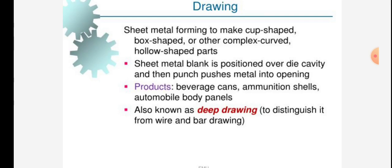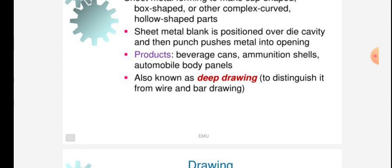Sheet metal blank is positioned over a die cavity, and then a punch pushes metal into the opening. Products include beverage cans and ammunition shells.